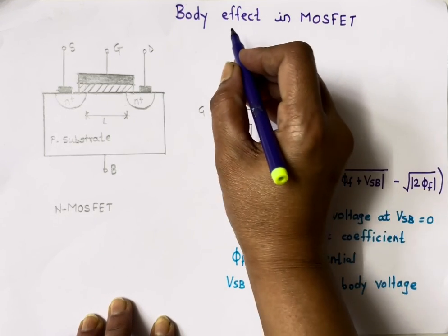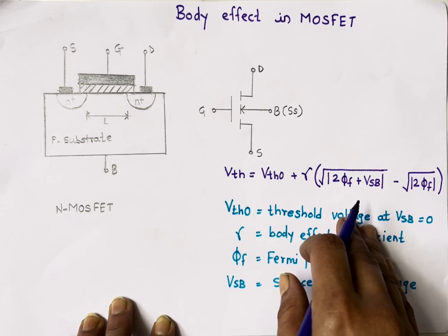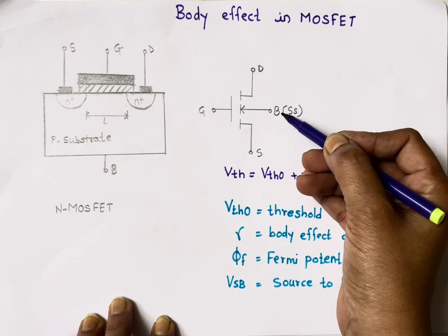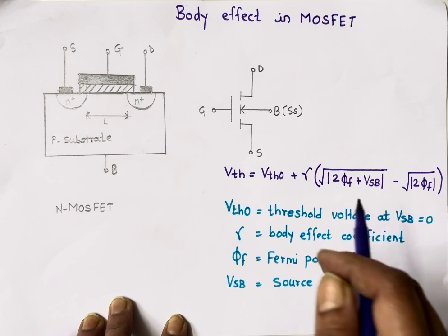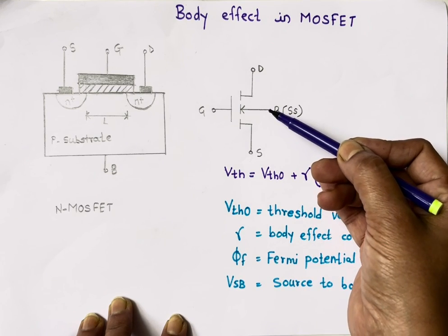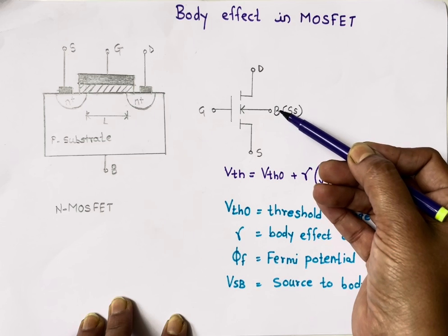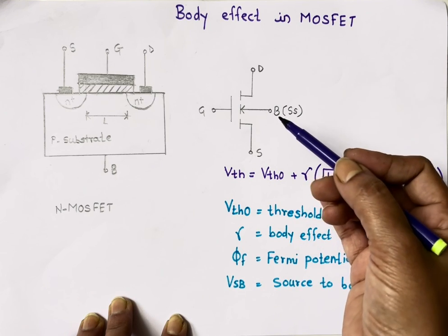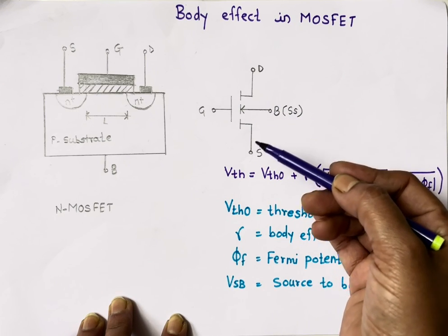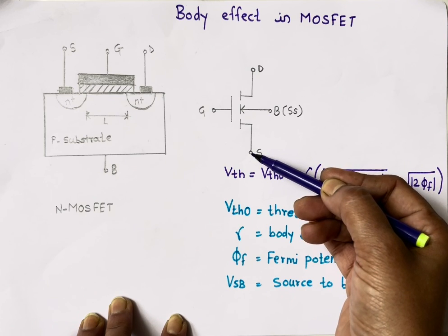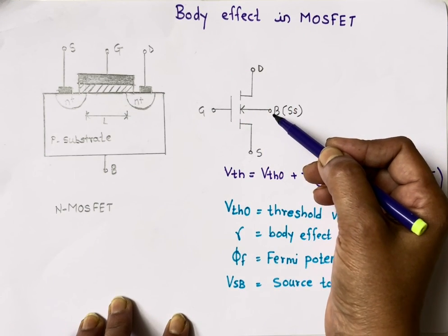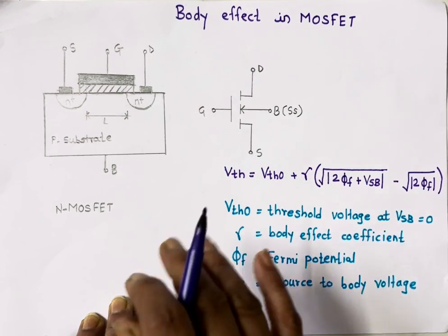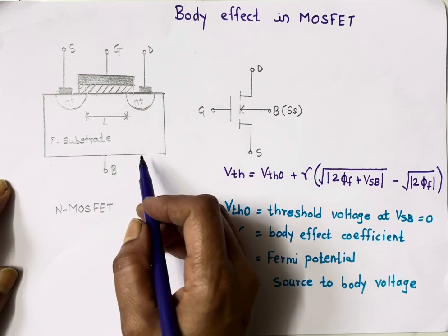Today's topic is body effect in MOSFET. We all know the MOSFET has four terminals: gate, drain, source, and body terminal or substrate terminal. Generally we connect the body terminal to the source terminal, so body and source are both at the same potential. But what happens if the body terminal has a different voltage compared to the source? Because of that difference in voltage between body and source, body effect occurs.